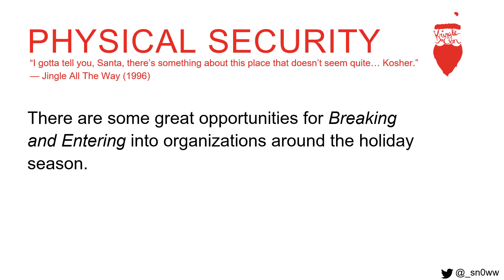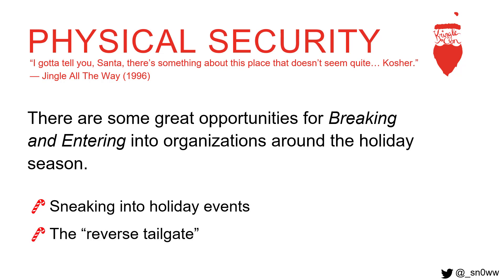Moving on to physical security. There are a lot of ways we can break into organizations around this time of year — with authorization, of course. You could sneak into holiday events, and I'll be covering some different things to think about in the next slides. Then there's something I like to call the reverse tailgate. Traditional tailgating is following someone into a secure area without authorization. However, the reverse tailgate is waiting for someone to leave the secure area, and as that door is shutting, that's when you make your opportunity to get inside.